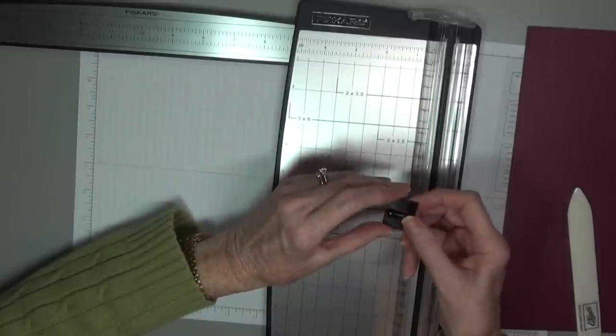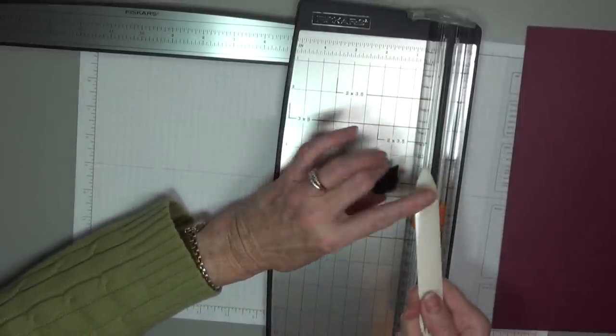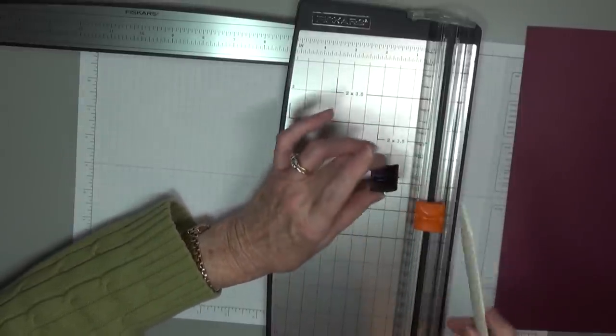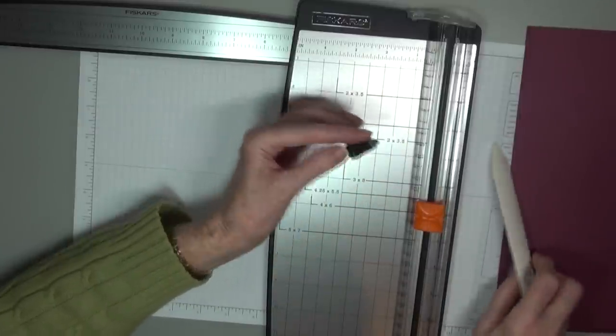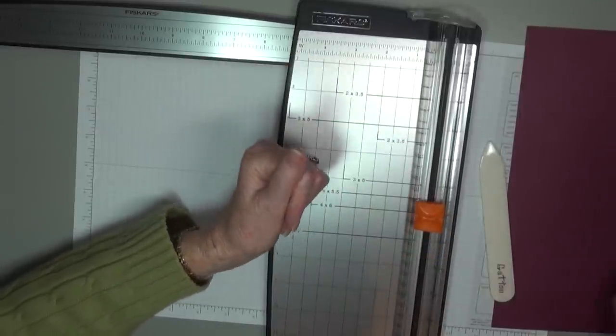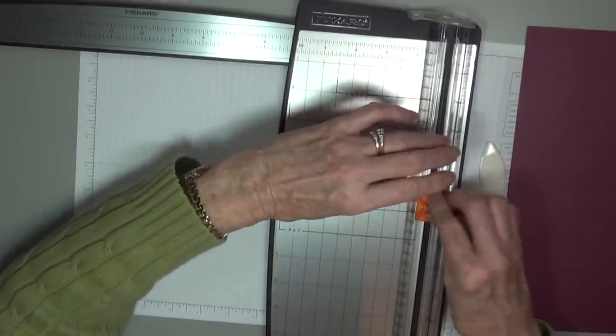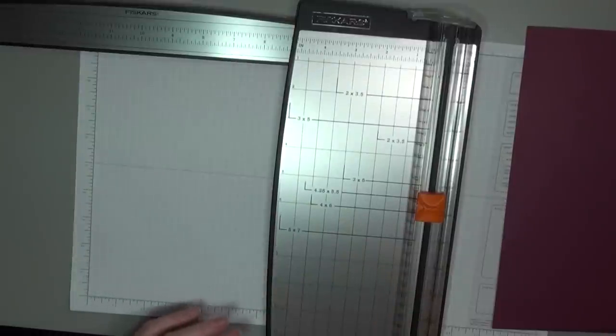And this is a score blade that also will come with that. But because I've always used my bone folder for doing my scoring on my cardstock, I kind of still do that. So I'm going to show you what I do, but be sure and try this. You may really like it.